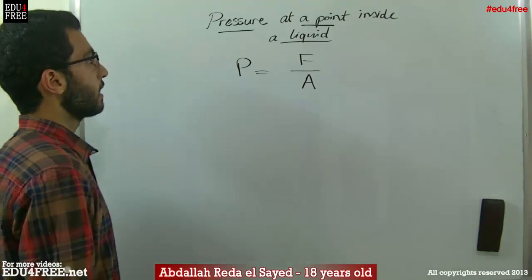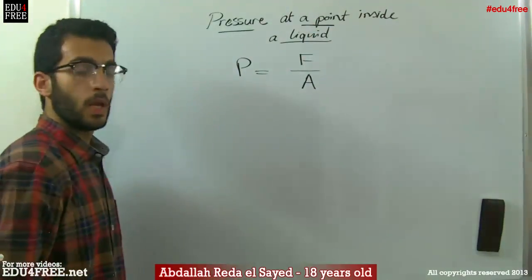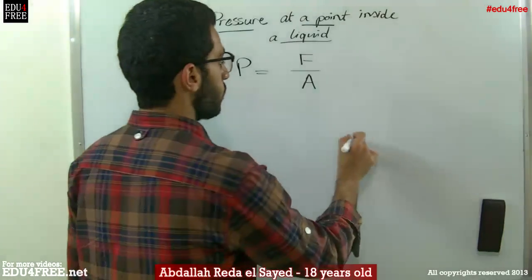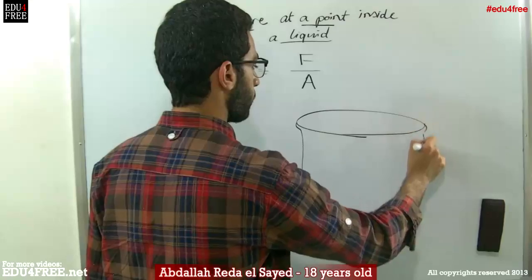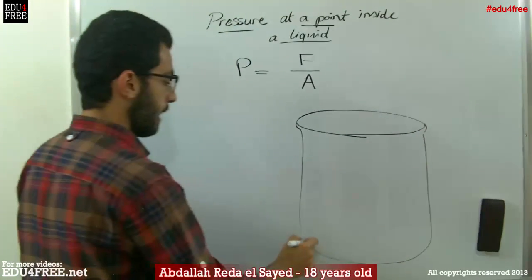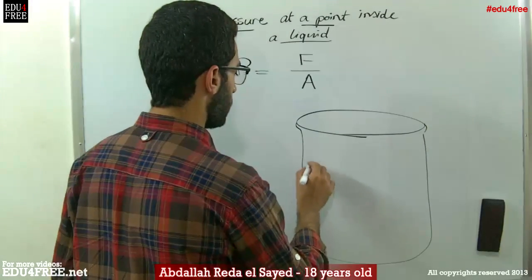So, what we are going to do today is calculate the pressure at a point inside a liquid. Let's suppose that we have a beaker, and this beaker contains a liquid.